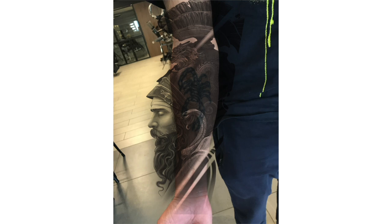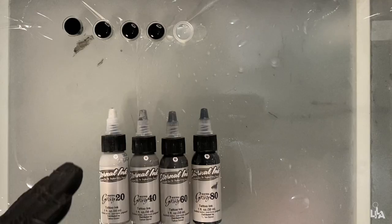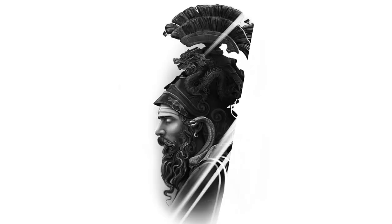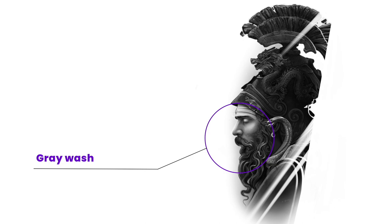So wherever there is an old tattoo in my cover-up, I'm gonna use neutral grays to cover it up. And I'm gonna use gray wash along with it wherever there is fresh tattoo. For example, I'll be working on a portrait, so I'm gonna use gray wash in that area.